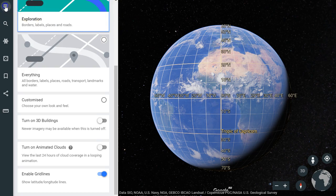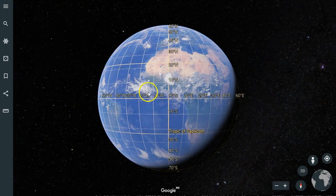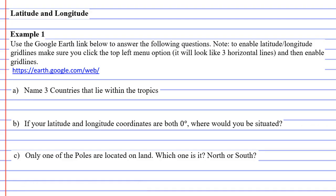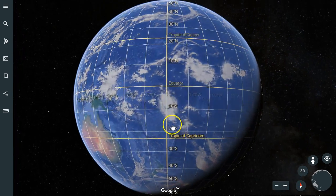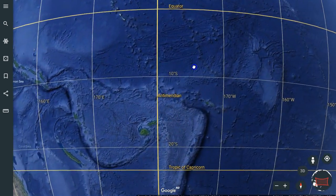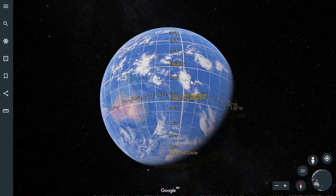And there we go, we've got our latitude and longitude lines available to look at. All right, going back to our question here. Question A says name three countries that lie within the tropics. So if we zoom in, and actually I'll just zoom out first.